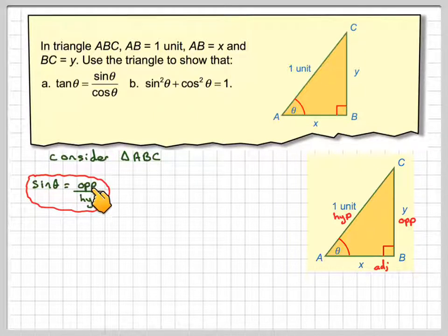Sin θ we know is opposite over hypotenuse, so in this case sin θ will be y divided by the hypotenuse, which is 1. Y over 1 is y, and therefore y must be sin θ. So this side here is sin θ.